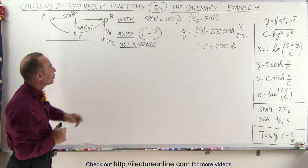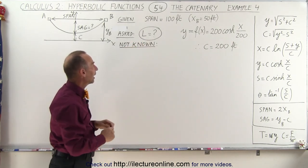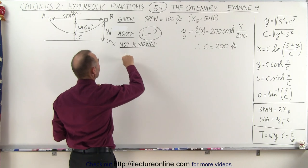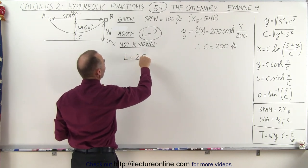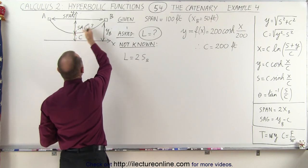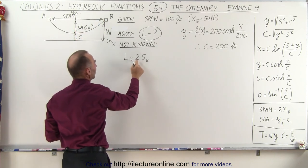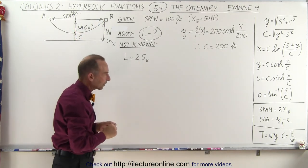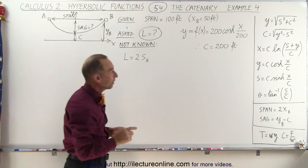So what we're trying to do here is we're asked to find the length of the cable, and we realize that the length is equal to twice s at b, of course, the full length of the cable from the bottom of the cable to the support, which is s sub b.